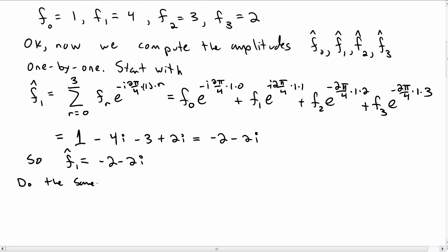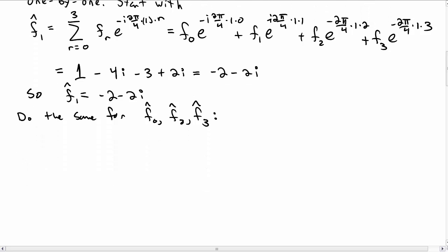We can do the same thing over and over again for the f0 hat, f2 hat, and f3 hat amplitudes. So f0 hat, the sum would look like this, the sum 0 to 3, and now there's a 0 in the exponent. I'm not going to do the math, but you should get 10. You should check that you get that.